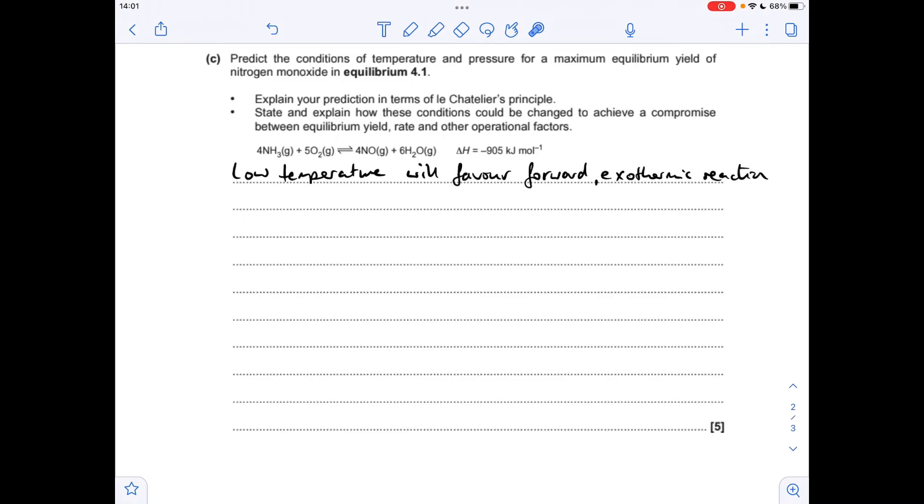In terms of pressure, we've got to consider the number of moles of gas on each side of the equilibrium. We've got 9 moles on the left, 10 moles on the right. So what kind of pressure will favour the side with the most moles? It's going to be a low pressure. So a low pressure will push the equilibrium over to the right.